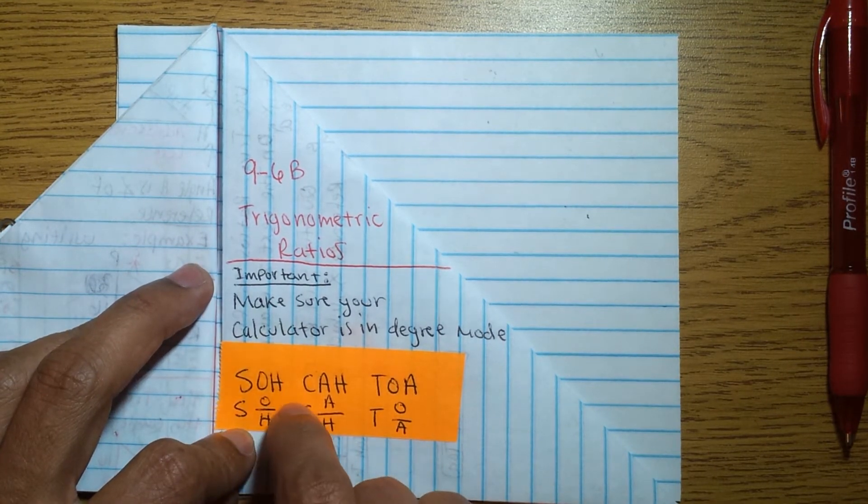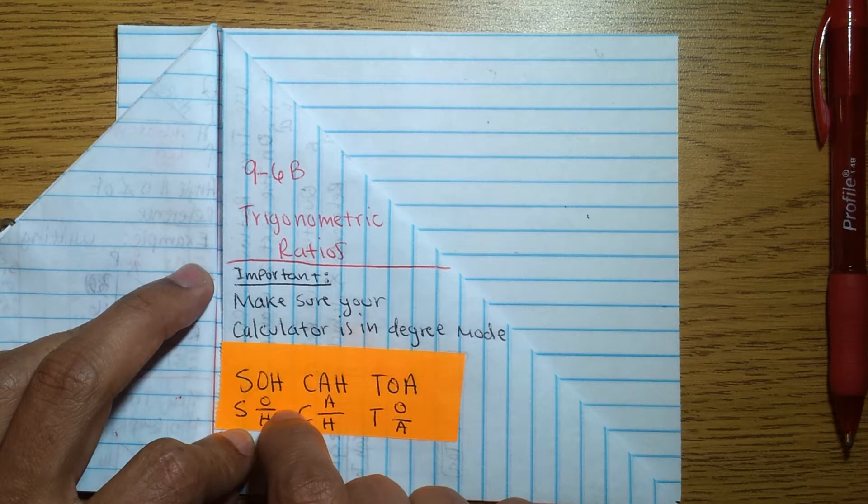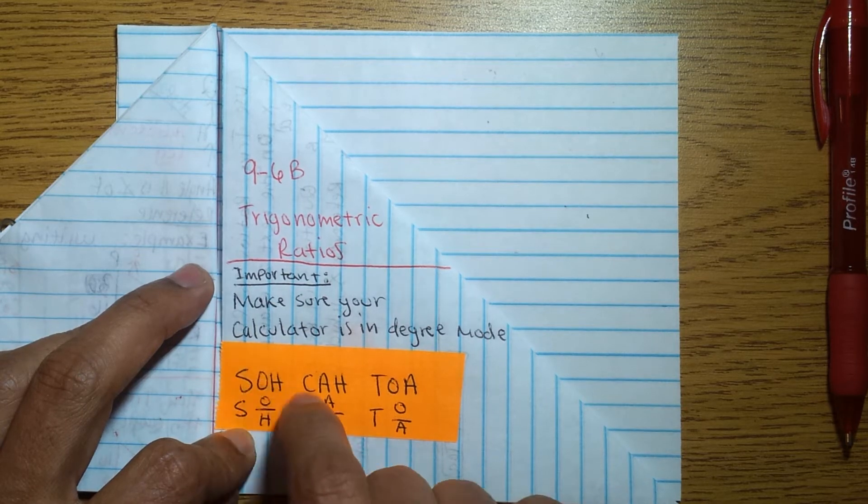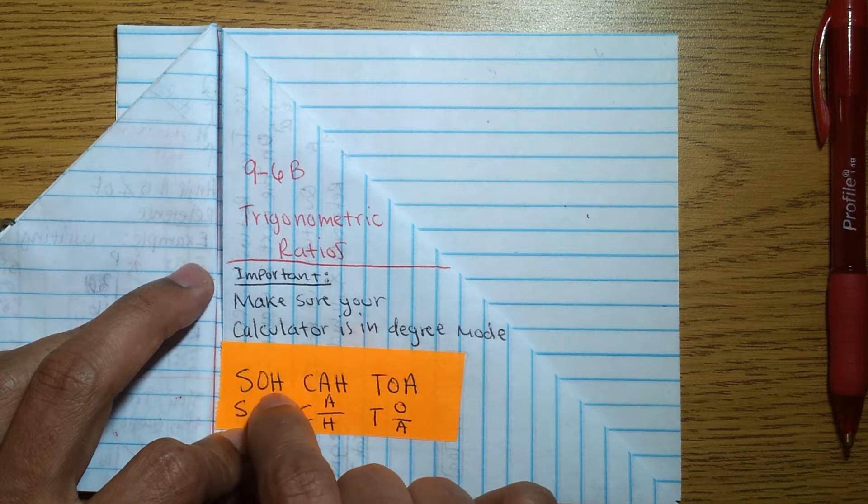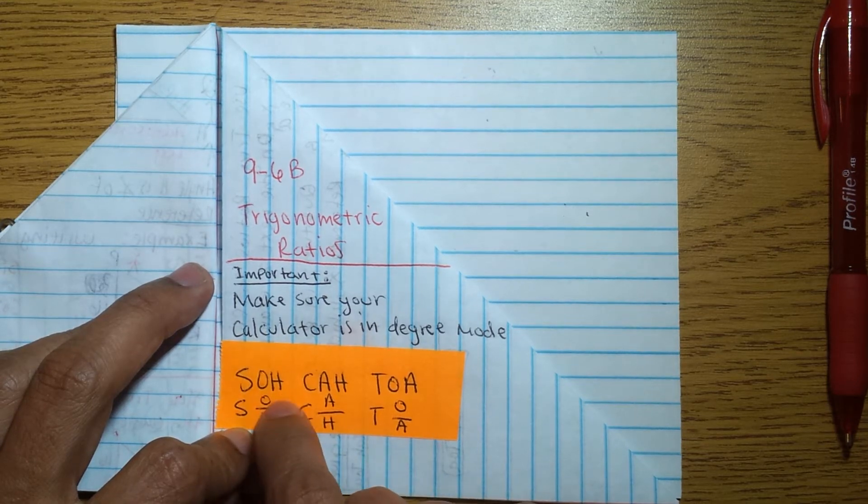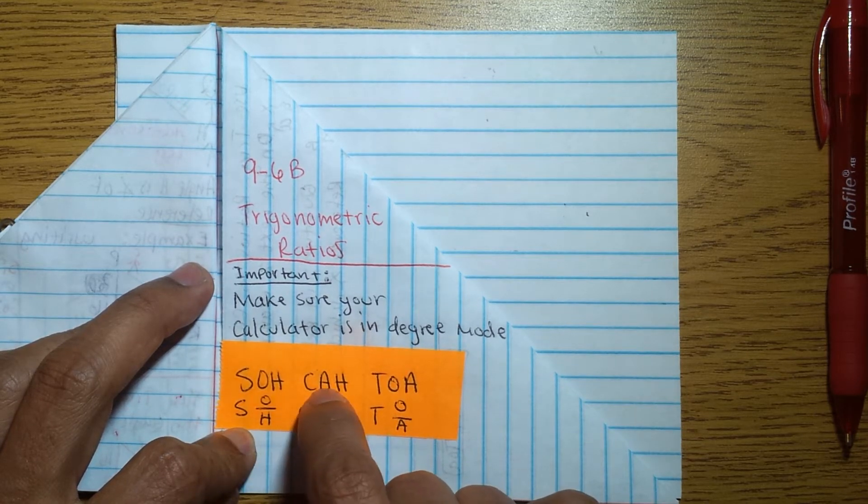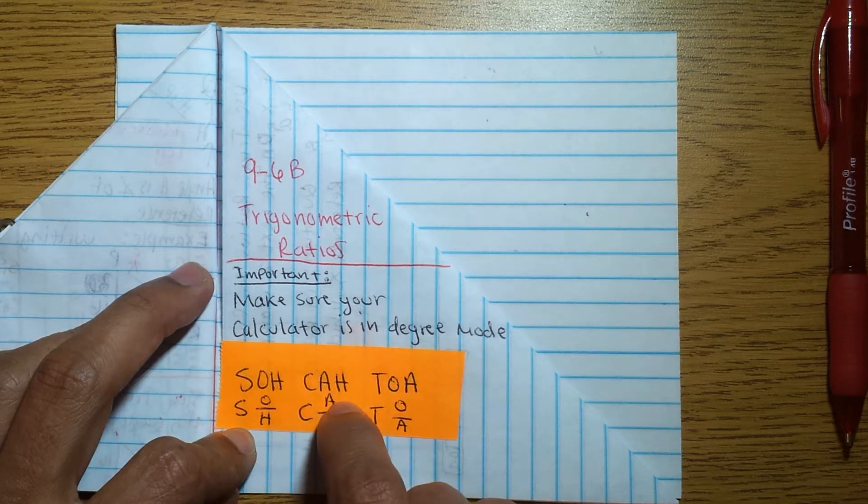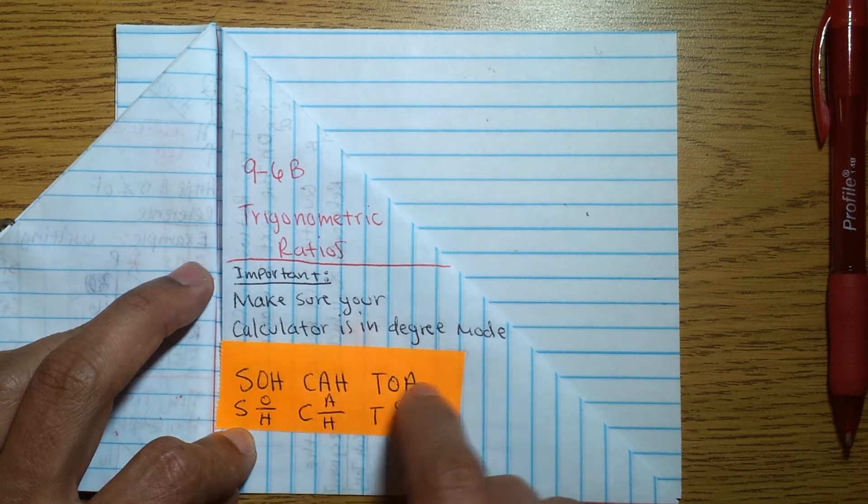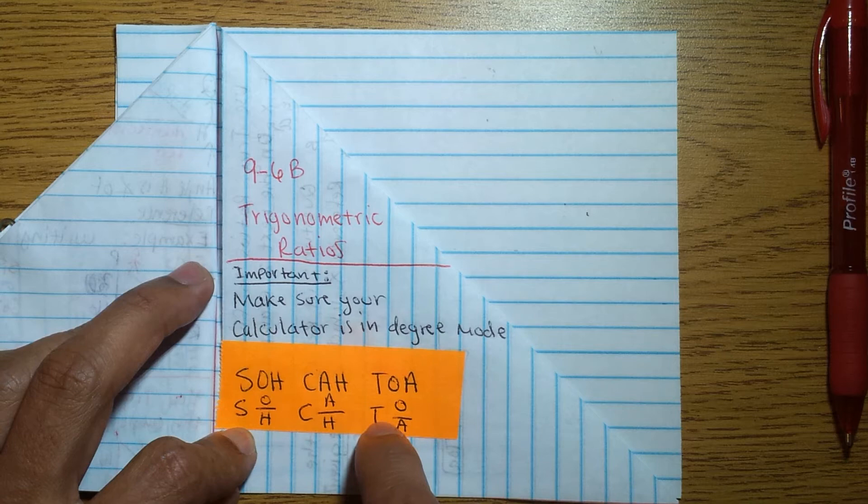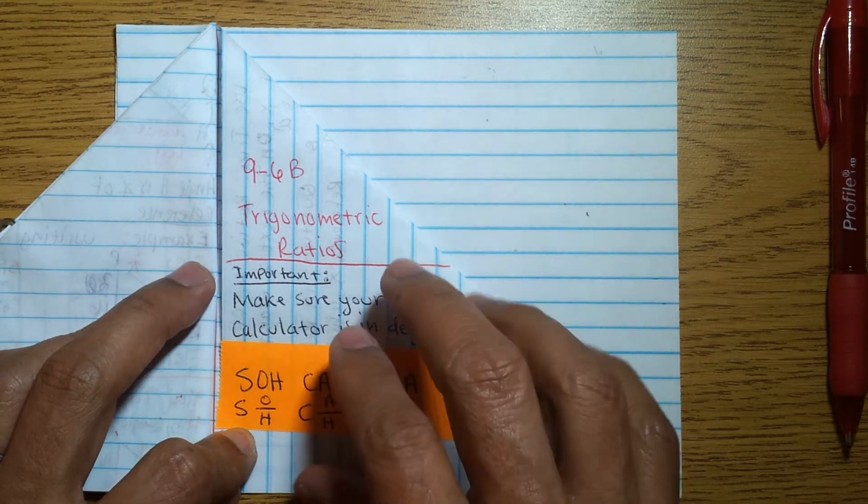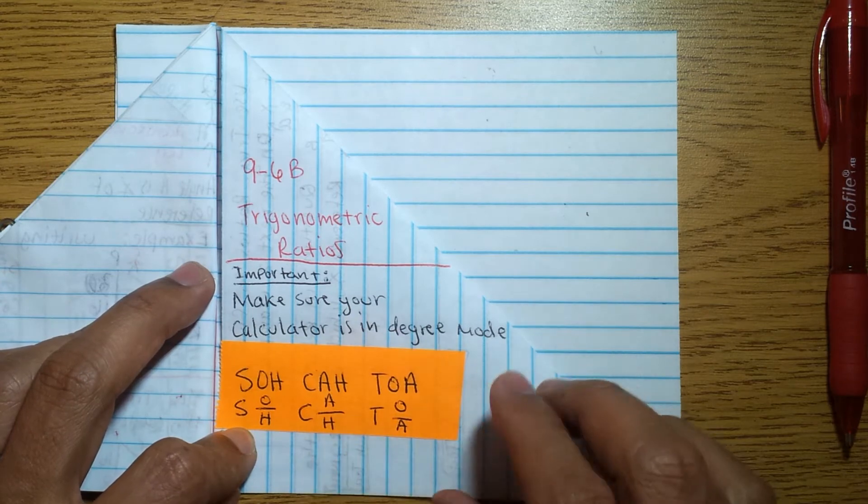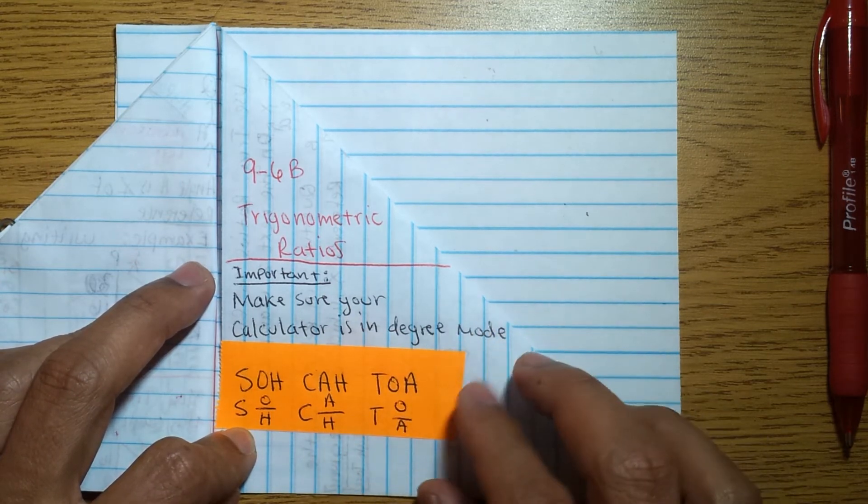This will help you remember what you need to use when you're given a problem: sine, cosine, or tangent. If it's sine, it's opposite over hypotenuse, which is what's shown here. Cosine, you have the adjacent and the hypotenuse, so that's adjacent over hypotenuse. And TOA, tangent is opposite over adjacent. Go ahead and write this down on the next page in your foldable.